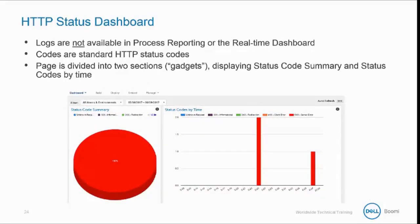On the HTTP status dashboard, you can view a summary of the logs on a particular Atom or environment during a specified period of time. These logs cannot be viewed in other displays like process reporting or the real-time dashboard, but they are available in the shared HTTP server logs. The codes are standard HTTP status codes. The HTTP status dashboard page is divided into two sections called Gadgets, and these display a status code summary and status codes by time.